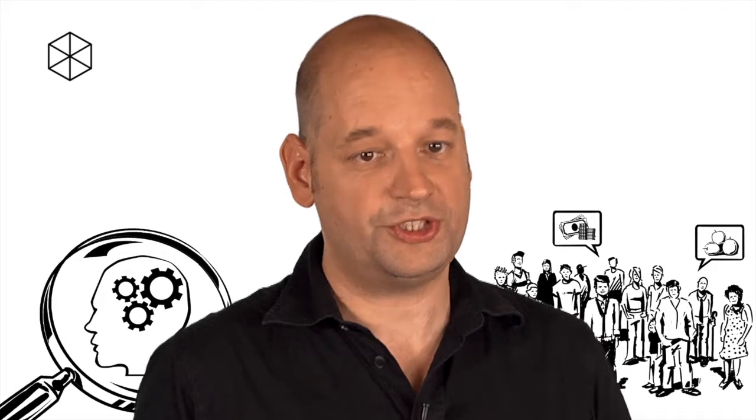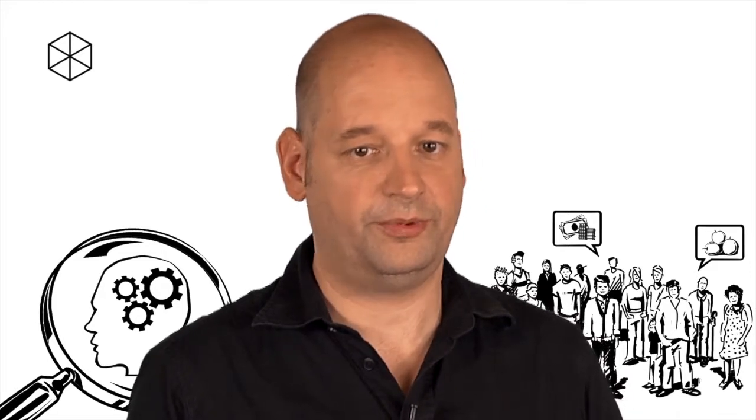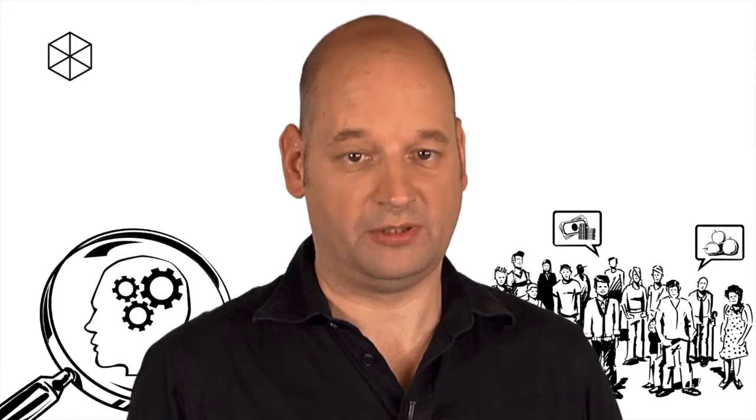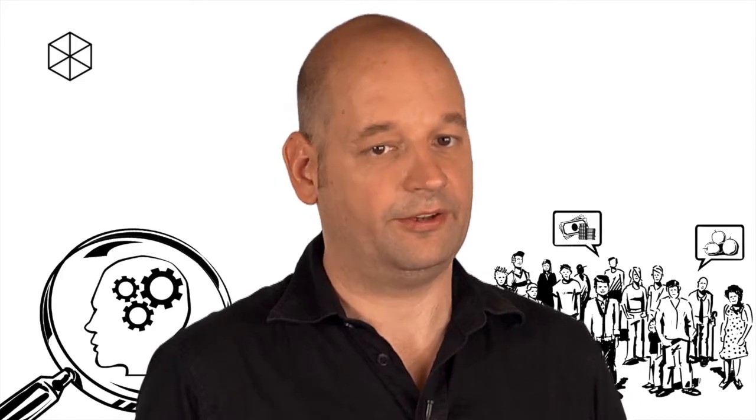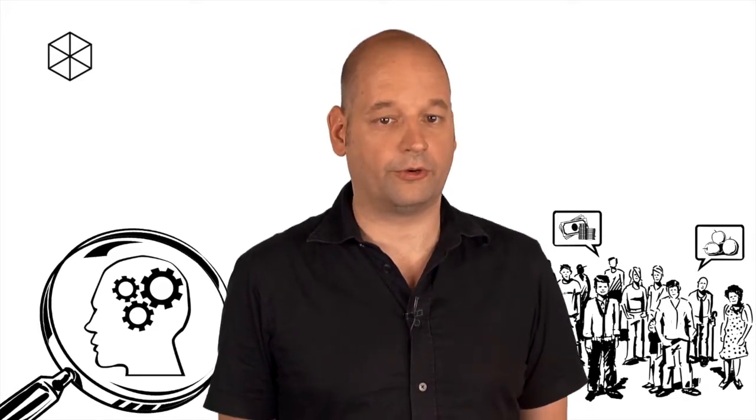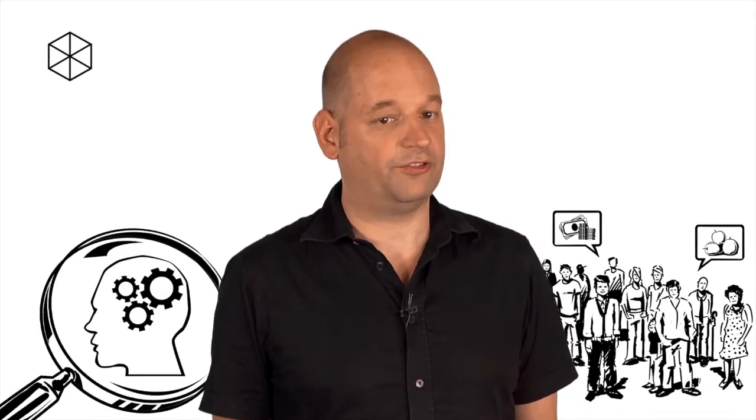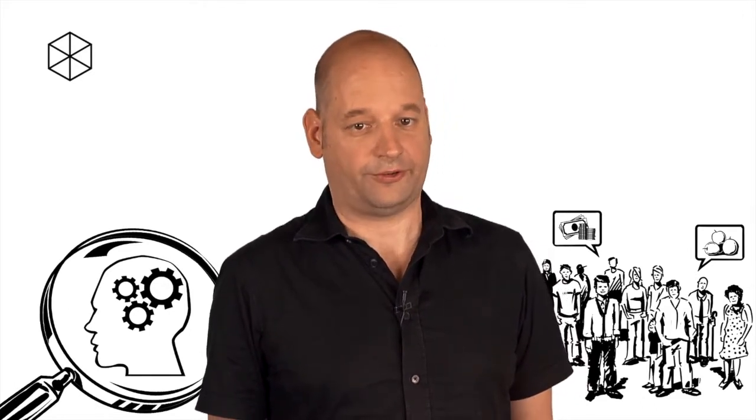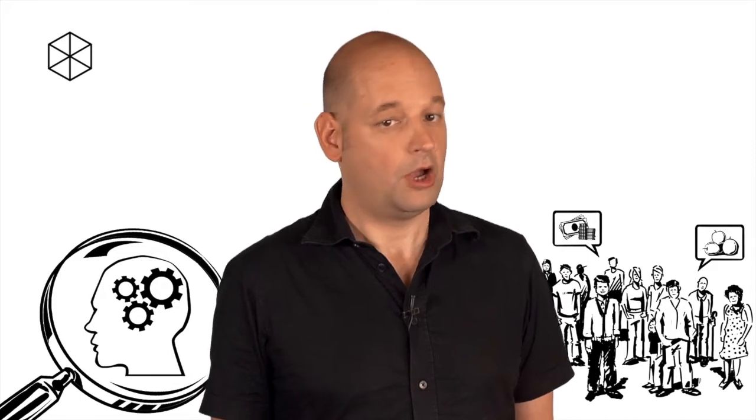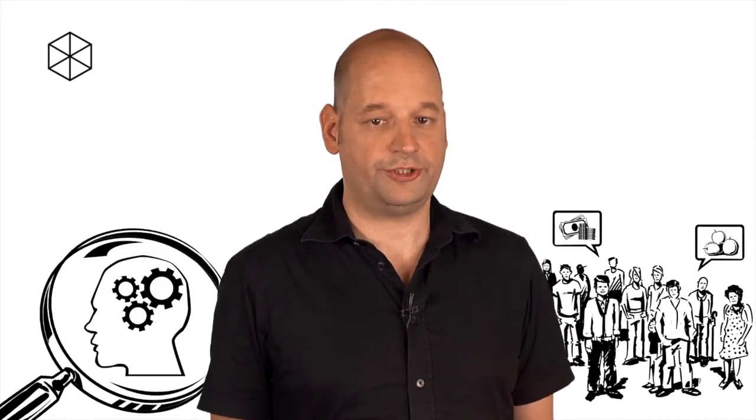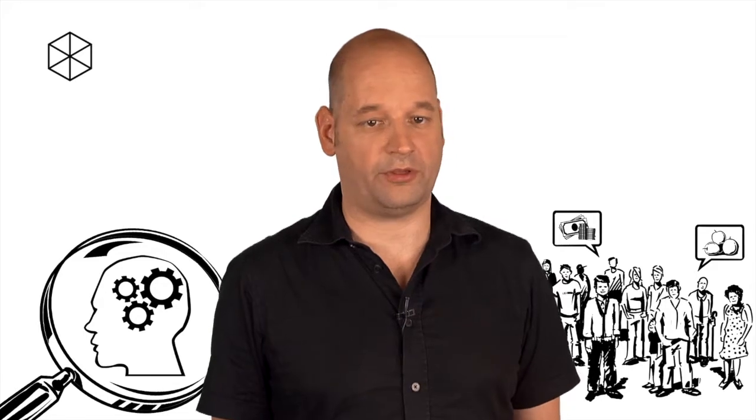In the illustrative example provided by Mary Follett, with the two sisters negotiating on the distribution of an orange, the sisters' incompatible positions are reflected in their respective claims to receive the whole orange. However, the sisters' underlying interests and the corresponding preferences for different sub-resources of the orange allow for an integrative win-win agreement. One sister with the interest to drink orange juice had a strong preference for the pulp, while the other sister with the interest to bake a cake had a strong preference for the peel.